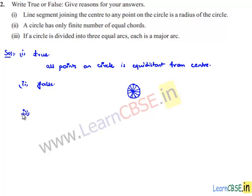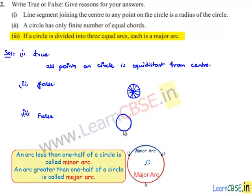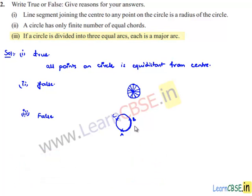Moving on to the third bit: if a circle is divided into three equal arcs, each is a major arc. That is false. If a circle is divided into three equal arcs — AB, BC, and CA — and we consider arc AB, then the remaining arc AC will be the major arc relative to AB. But AB, AC, and CB cannot each individually be major arcs.